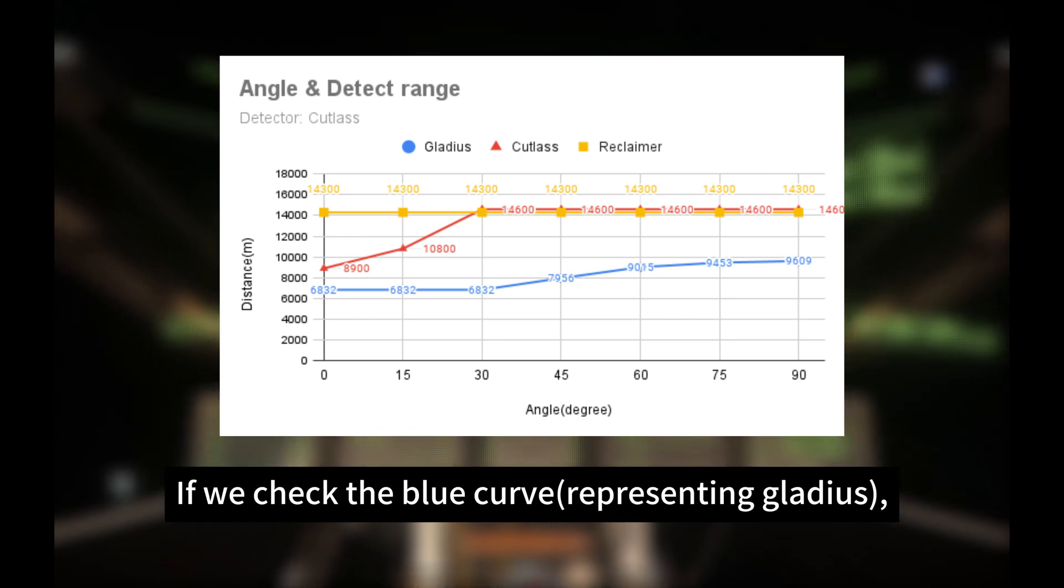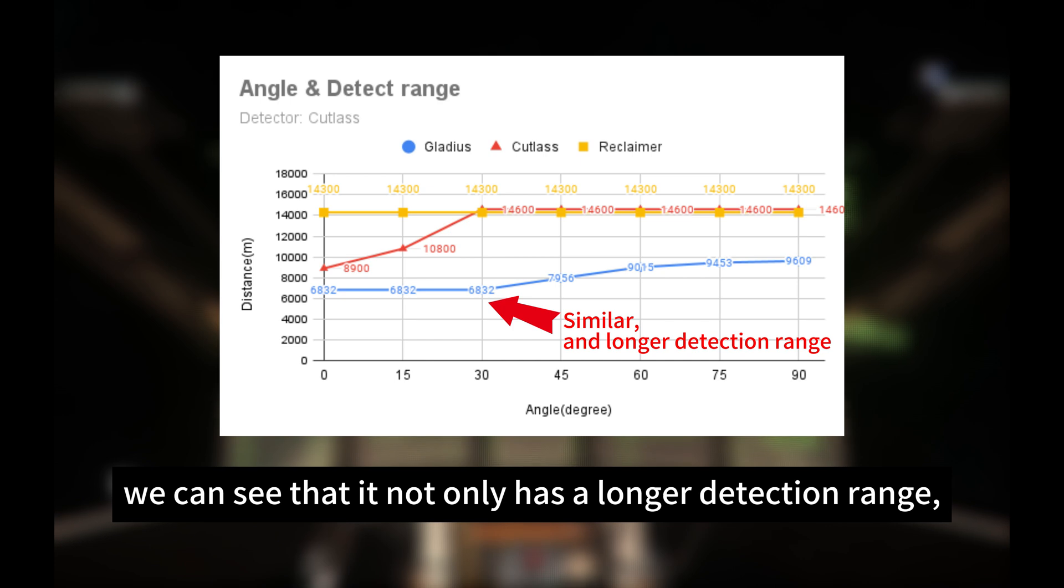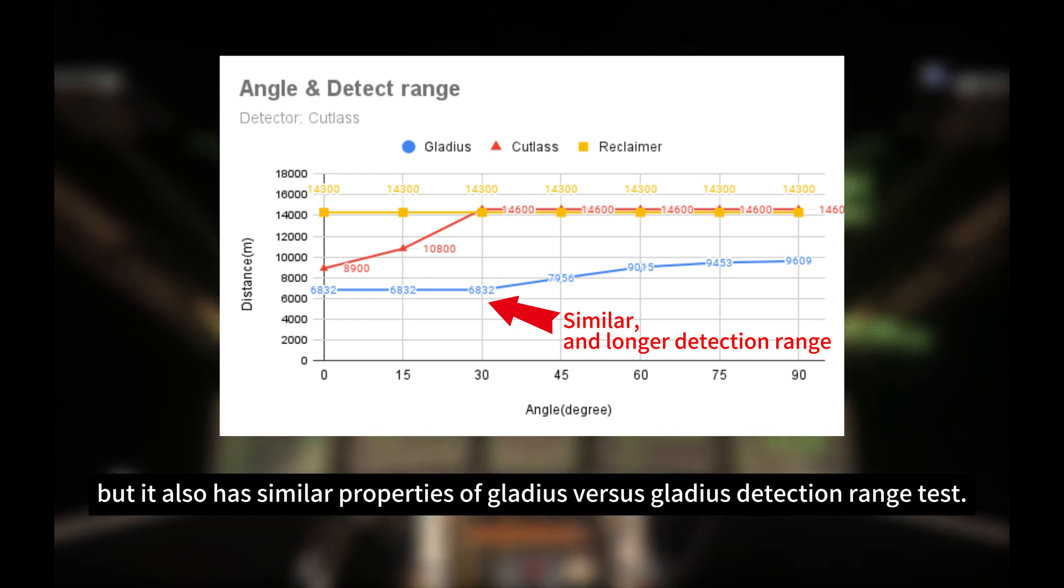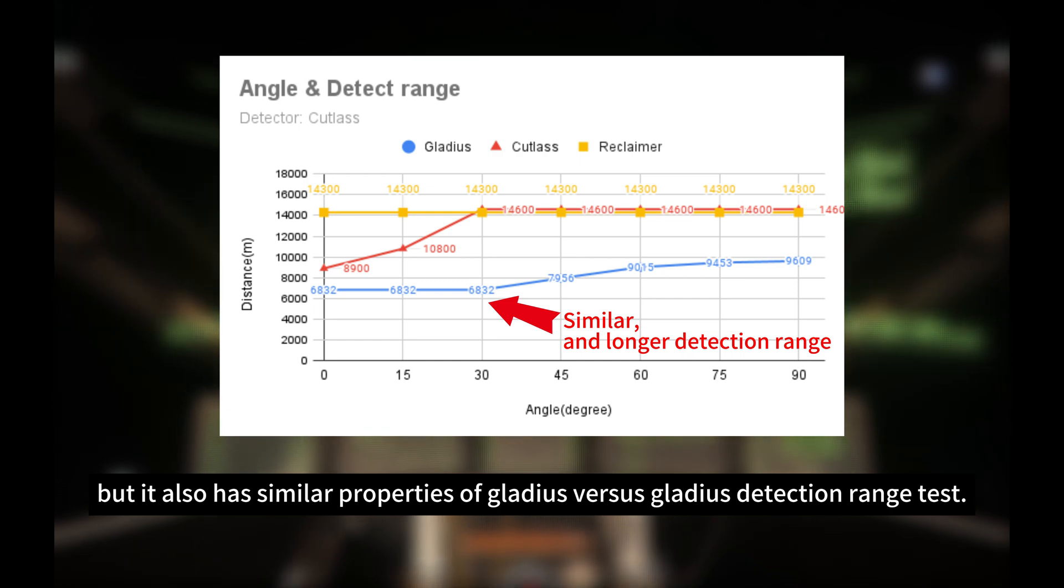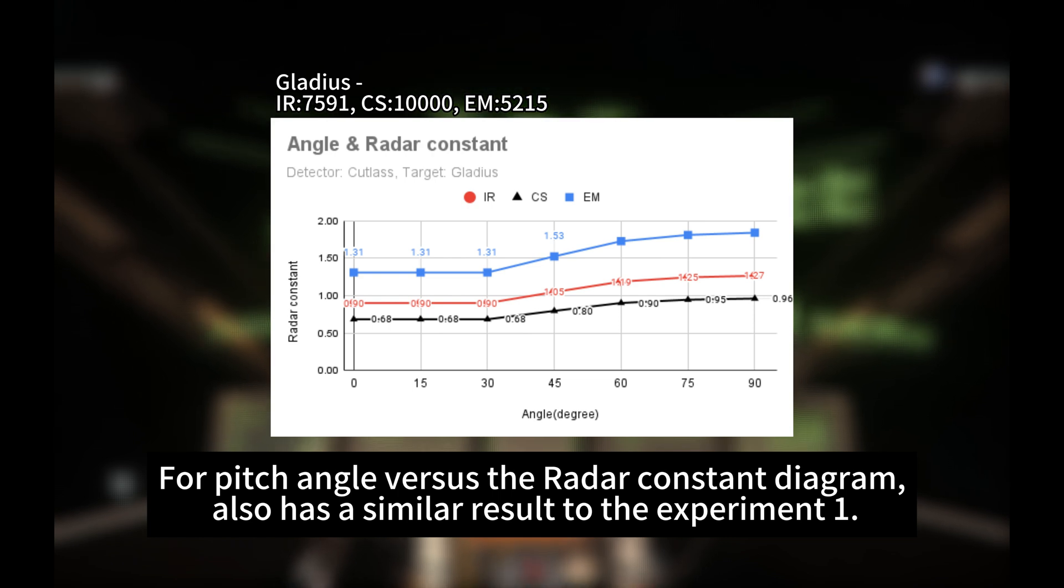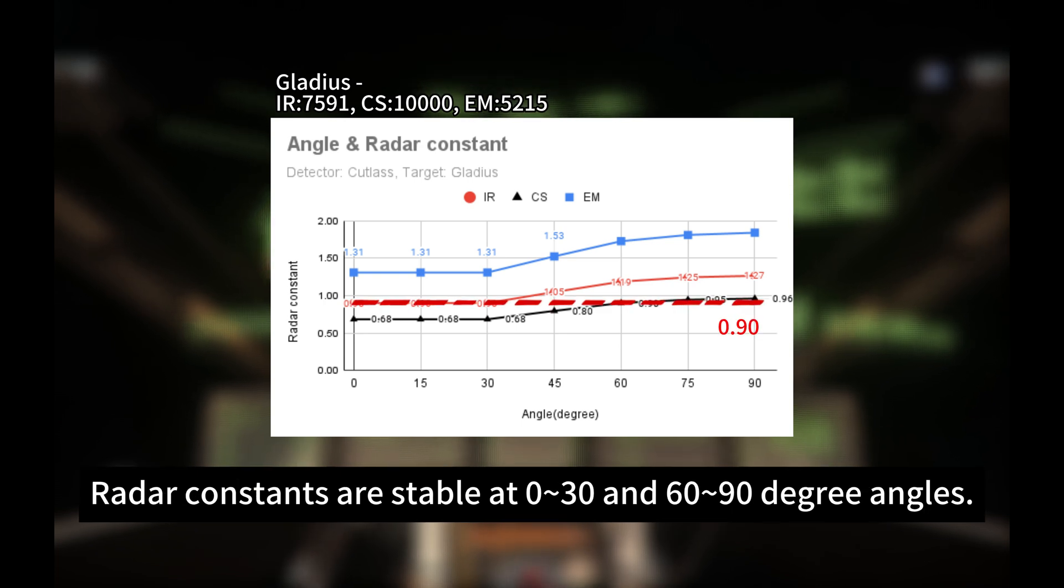If we check the blue curve representing Gladius, we can see that it not only has a longer detection range, but it also has similar properties of Gladius versus Gladius detection range test. For pitch angle versus the radar constant diagram, it also has a similar result to experiment 1. Radar constants are stable at 0 to 30 and 60 to 90 degrees angles.